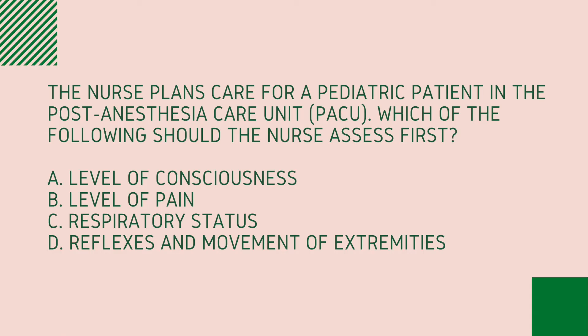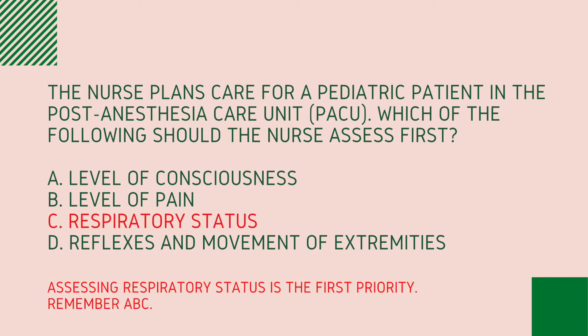I'm sure you are all familiar with using tools like the ABCs — airway, breathing, and circulation — and Maslow's hierarchy of needs to help determine stability and therefore prioritization. That can be helpful in straightforward questions where we can look at an answer set and quickly determine that respiratory status is the patient's highest need. However, rarely are nursing school or NCLEX questions this straightforward.